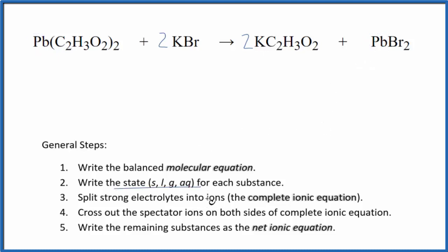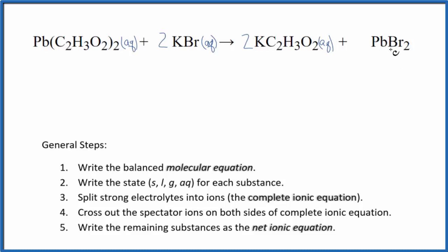Now we can write the state for each substance. Acetates are very soluble, so we write AQ because they dissolve and break apart into ions. Potassium bromide — bromide is very soluble and potassium compounds are also soluble, so aqueous. We have potassium acetate on the product side; that'll be soluble. But whenever I see a lead compound bonded to something like bromine, iodine, or chlorine, I want to be careful. Looking it up on a solubility table, it says it's slightly soluble. For net ionic equations, we consider slightly soluble to be insoluble, so this will be a solid — a precipitate that falls to the bottom of the test tube.